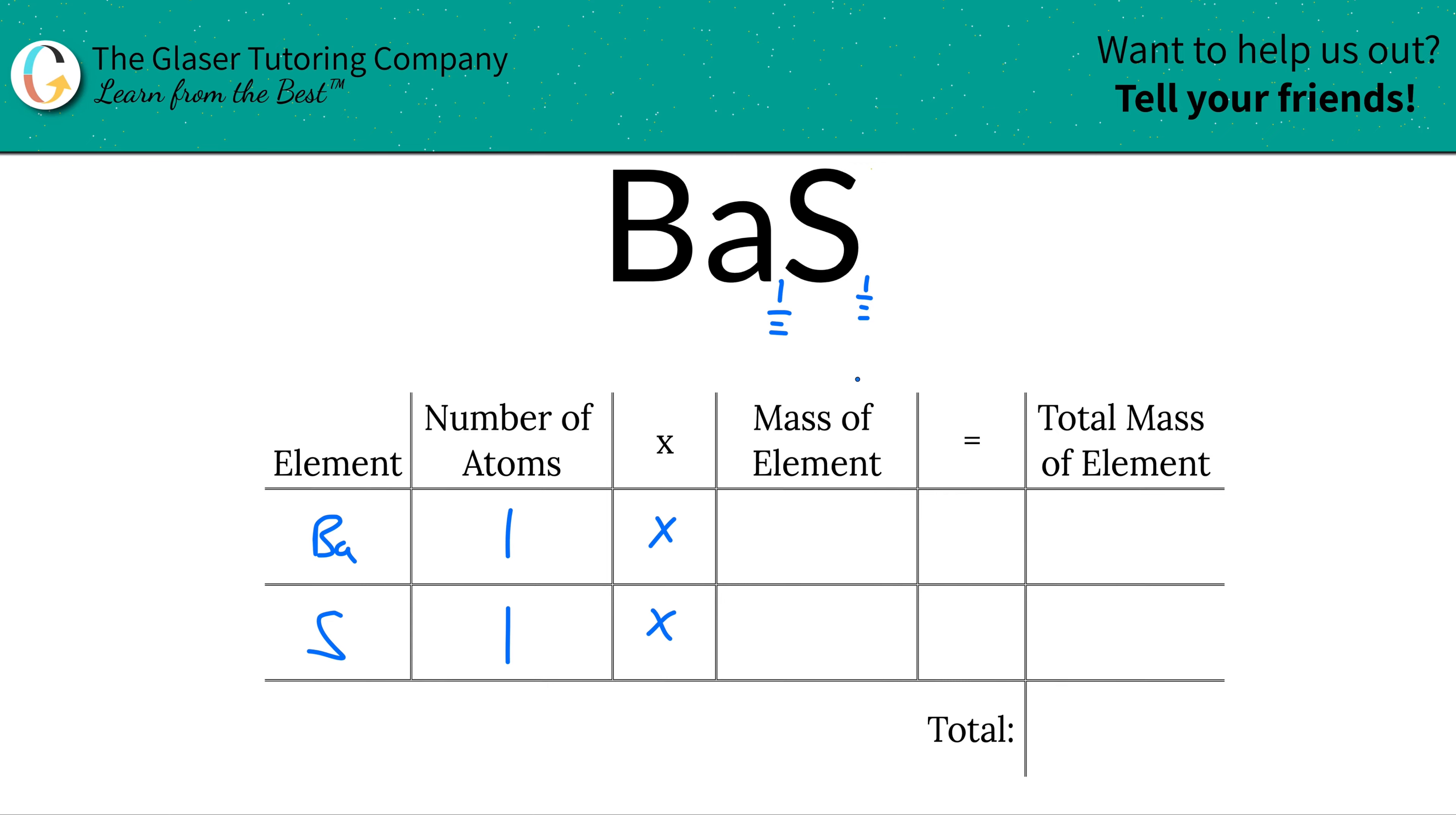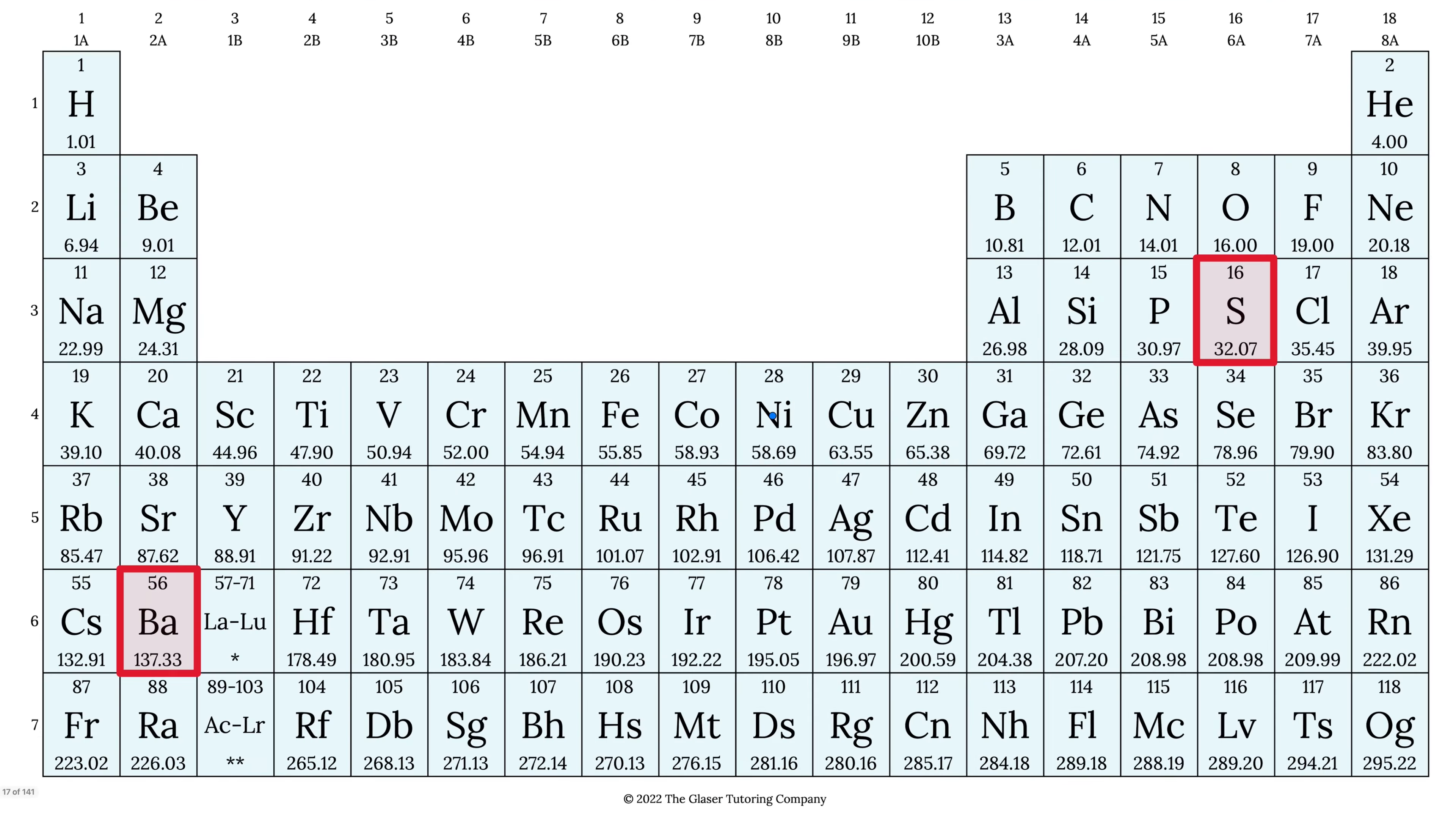Then we're going to take those number of atoms and multiply it by the mass of the element. Now this is simple, we go to the periodic table, right? This is where that handy-dandy periodic table comes into play. There's your barium, 137.33, here's your sulfur, 32.07.